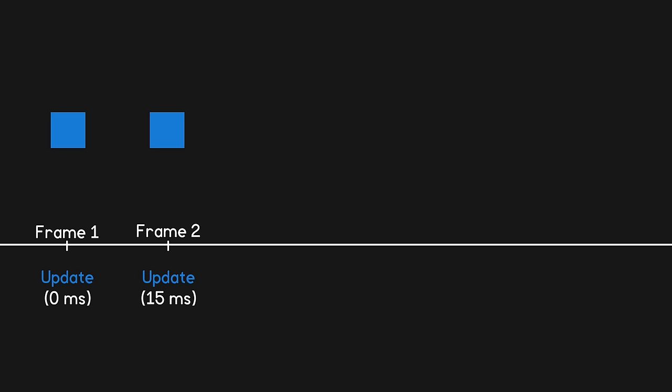The update method gets called just before the scene is drawn to the screen, so the first update occurs at time 0, and then perhaps 15ms later the update method is called once again, it moves the object to its new position, and the next frame is drawn.